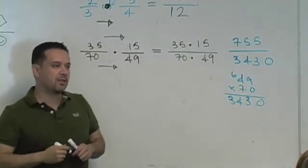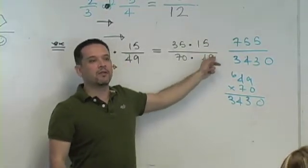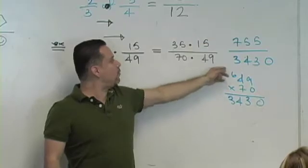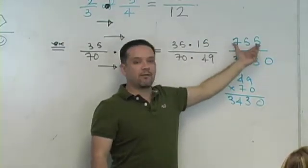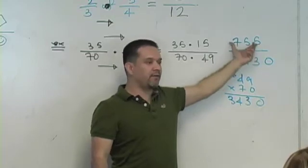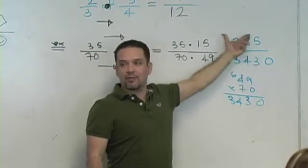Monday, every fraction that you see in your life has to be reduced to lowest terms. So at this point, what would you do? You'd have to reduce, start with factor trees for 755, factor trees for 3430, factor trees for both of these.